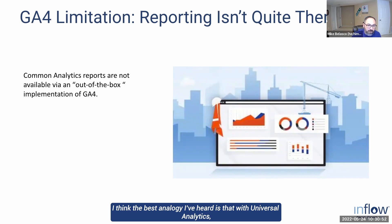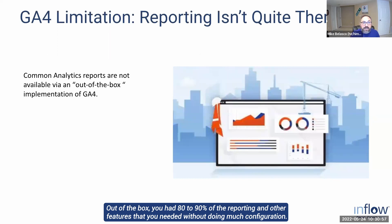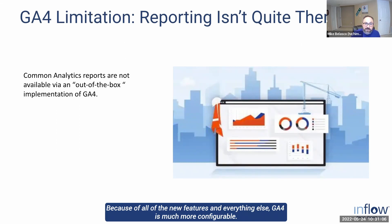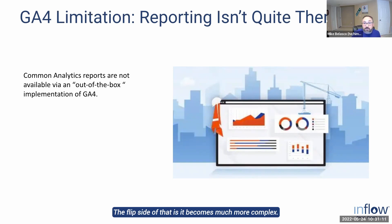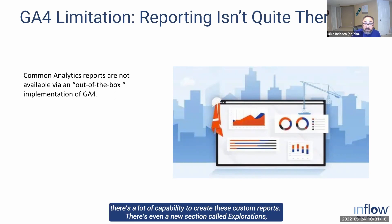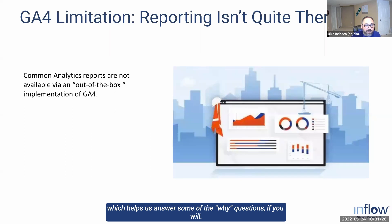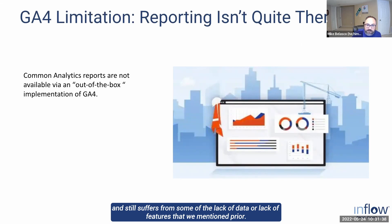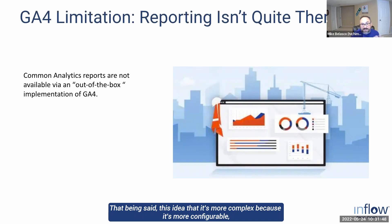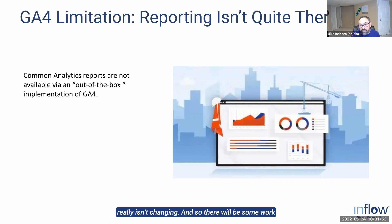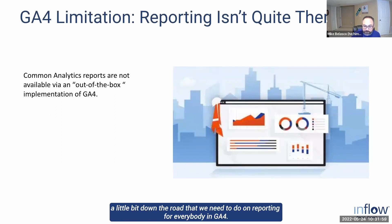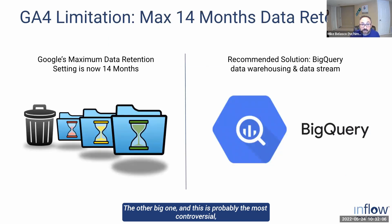Reporting isn't there yet either. The best analogy is that with Universal Analytics you could install it fairly easily and have 80 to 90 percent of the reporting you needed out of the box. GA4 is much more configurable, but the flip side is it becomes much more complex. Right now the reporting is pretty sparse — there's a new section called Explorations which helps answer the 'why' questions, but it still suffers from missing features. GA4's configurability really isn't changing, so there will be some reporting work needed for everyone.